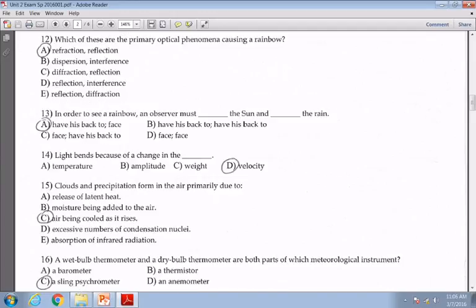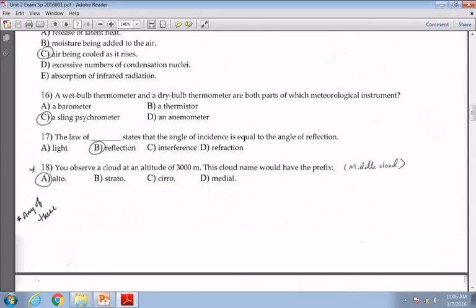Question number sixteen, we did the sling psychrometers in here. That's what question sixteen is about. So the wet bulb and dry bulb are parts of a sling psychrometer. Question seventeen, the law of reflection states that the angle of incidence is equal to the angle of reflection. And eighteen was another one that I tried to hand correct, and if you missed it, go ahead and give it to you. Because what I really should have said, you observe a middle cloud instead of giving it the elevation. But some of you got that right. So the answer is alto.